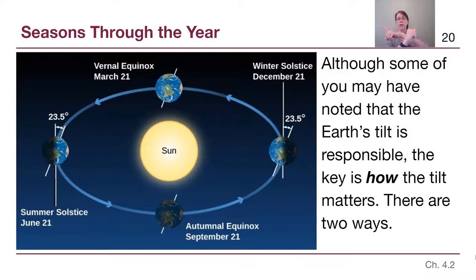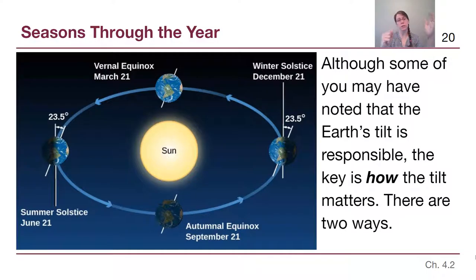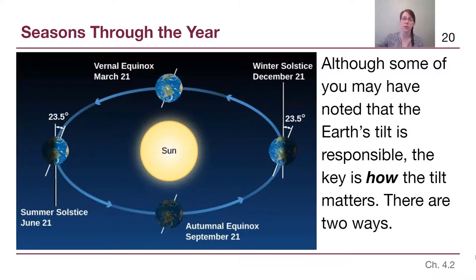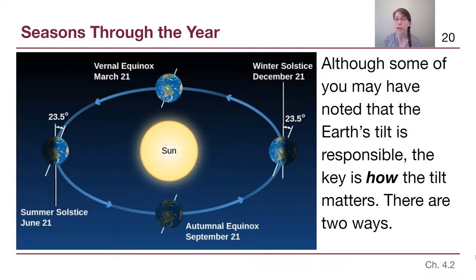So winter solstice is when we're perfectly pointed away. The spring equinox — the vernal equinox — is when we're back to pointing sideways instead of towards or away from the sun. And then the summer solstice is when the earth's tilt is pointing towards the sun, tilting us towards that sunlight. These four terms are ones that are going to be useful to build into our vocabulary, because they really are the four key dates in our entire calendar when we're thinking about seasons. The winter solstice and summer solstice are the two extremes, and the two equinoxes in between are the most neutral and moderate.